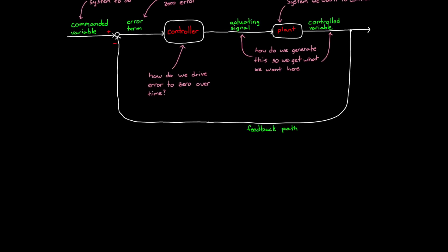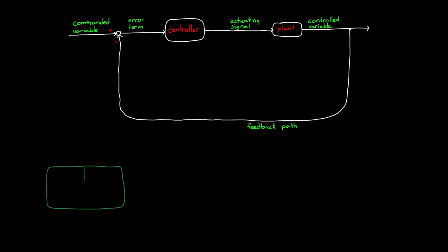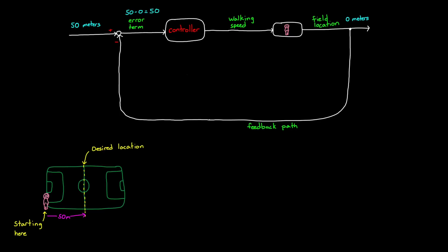Let's illustrate this with an example. Imagine you are standing on the goal line of a soccer field, and you want to walk to the half field line 50 meters away. In this case, you are the plant. The actuating signal is the speed and the direction that you walk. And your current location on the field is the output variable, or zero meters to start. And then 50 meters is the command. Therefore at the beginning, your position error is 50 meters. You still have a ways to go.